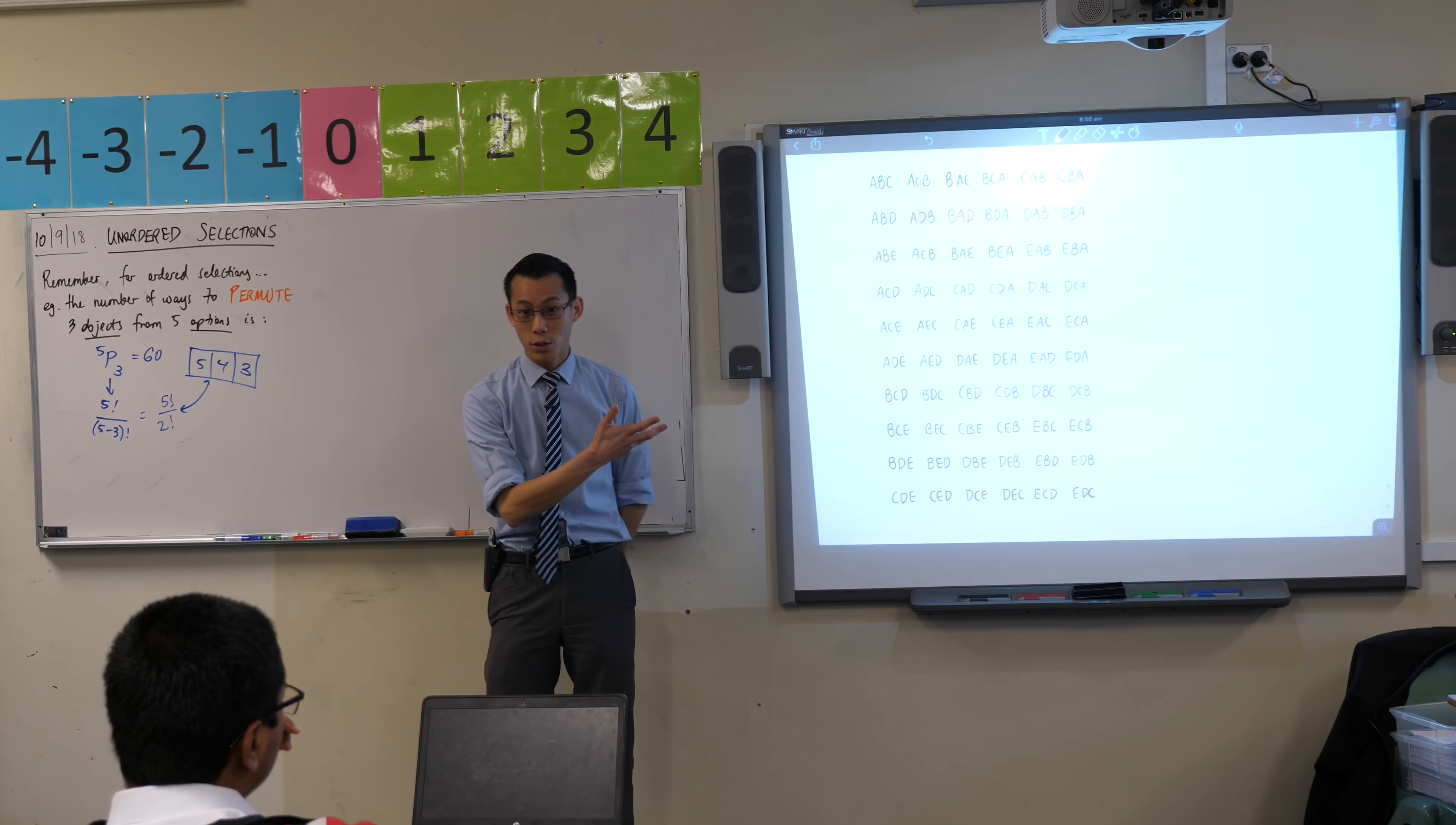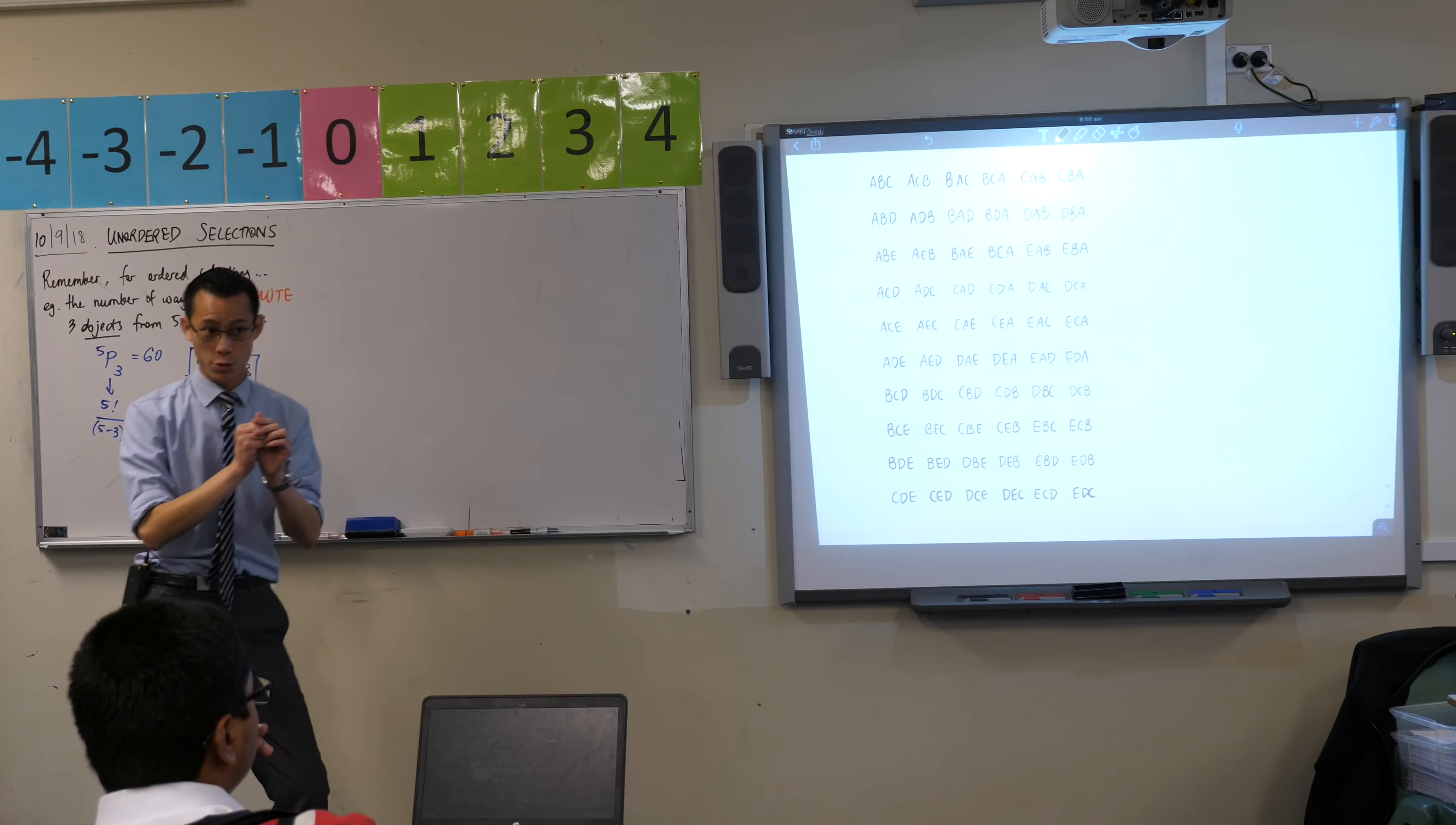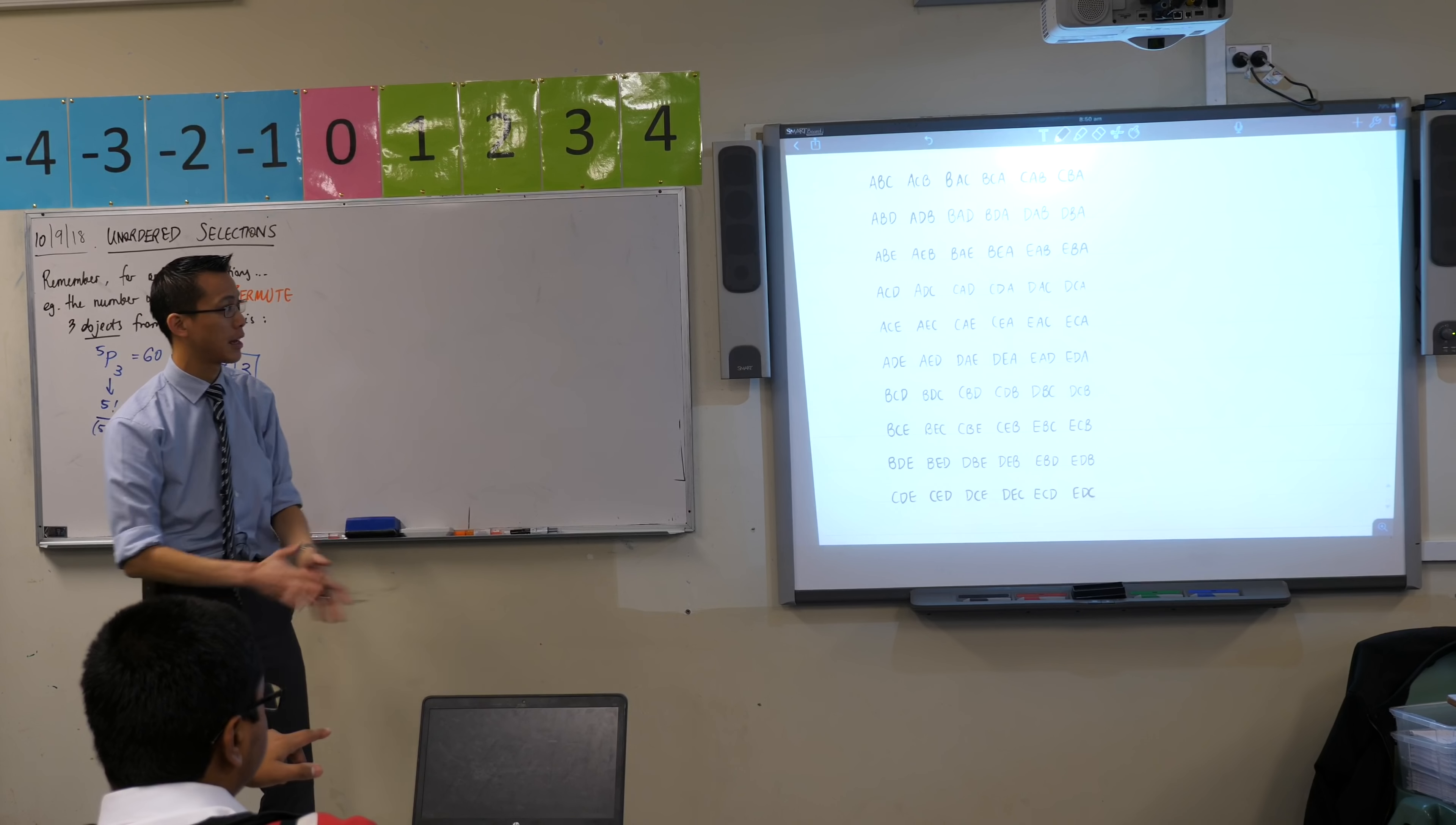Now if you have a look, right, this is three-letter words and you can see I've got A, B, C, D, and E to choose from. And can you see that there are 60 there? Are you happy with that? Six by ten.